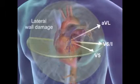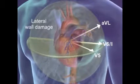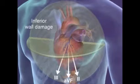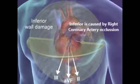Lateral wall damage shows in V5 and V6 and in leads 1 and AVL. Inferior wall damage creates changes in the lower limb leads 2, 3, and AVF.